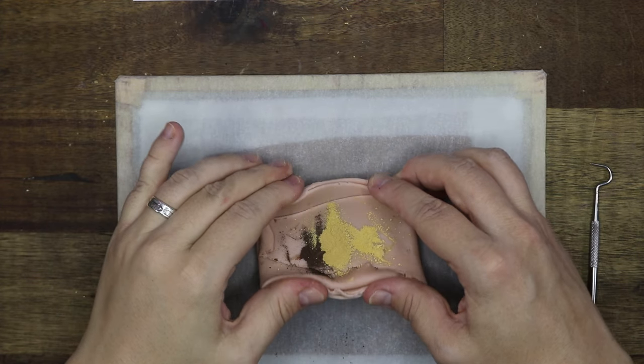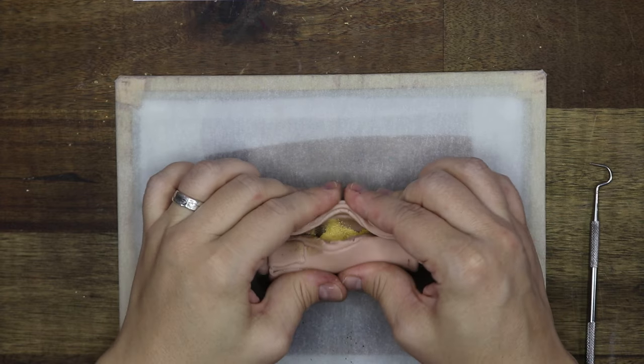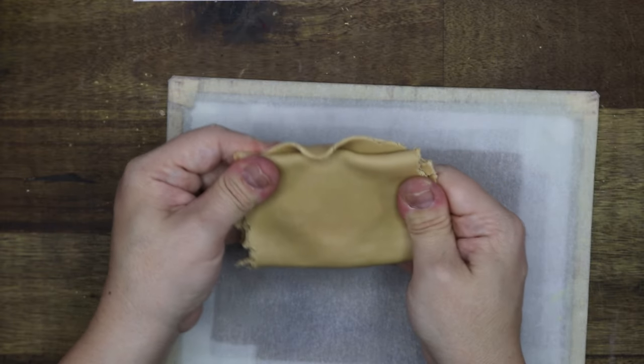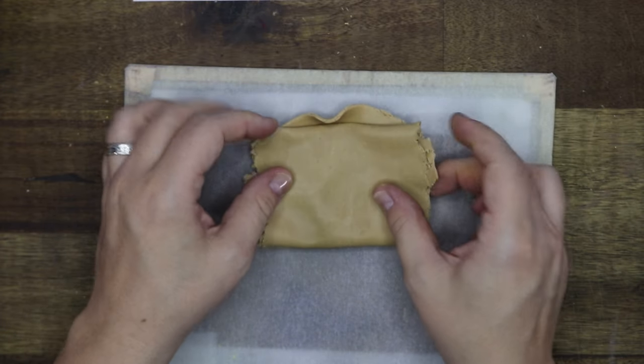Then it's time to mix it all together and condition the clay. You know the clay is well conditioned when it's nice and pliable and all the colour is mixed in. I use an old pasta machine to save my hands.